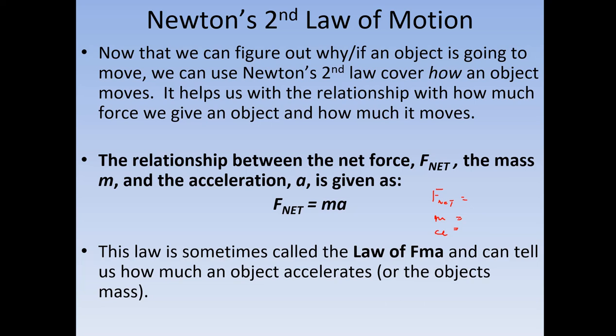What I'd rather you do is write down their units. Force, F net, is represented by newtons. M is mass. That's represented by kilograms. And A is acceleration, which is meters per second squared.